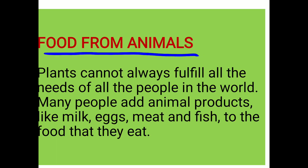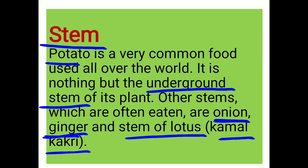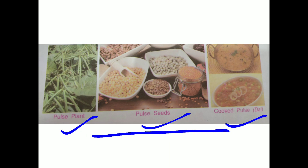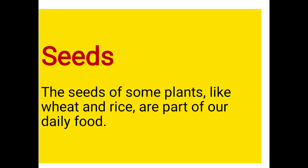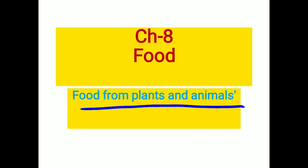I think I have explained and discussed everything — food from plants and food from animals. Now you will go through the chapter. Read it at least three or four times, and draw the diagrams also. That's all for today. Thank you. Have a nice day.